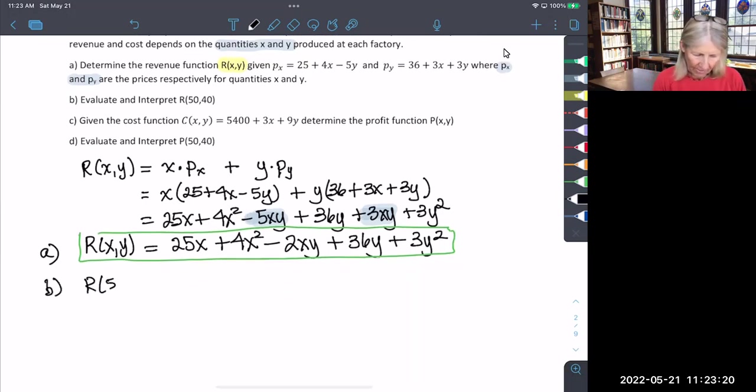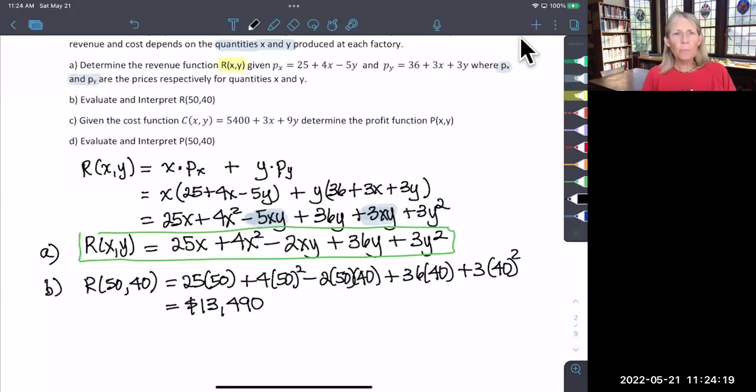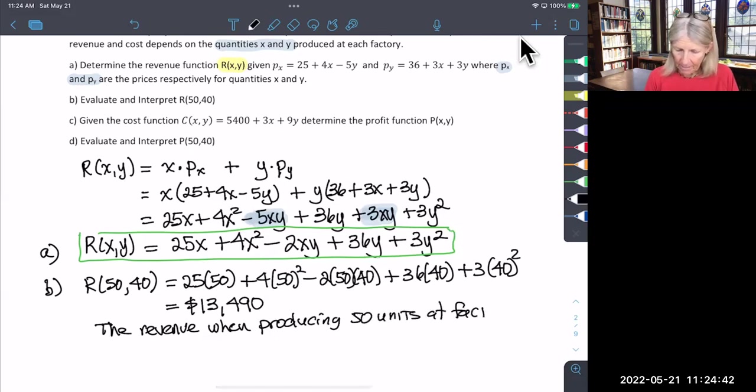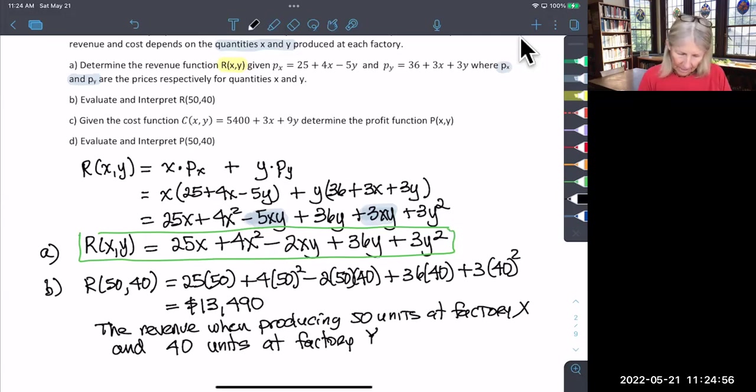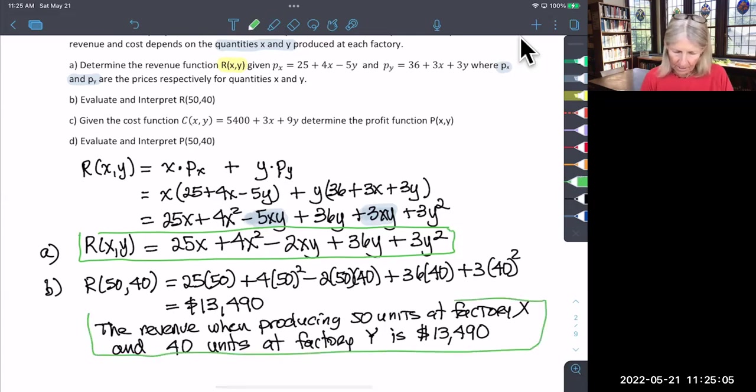We plug in 50 for X and 40 for Y. Note that the revenue function terms can be in any order. Plugging in 50 and 40 gives a dollar amount of $13,490. This represents the revenue when producing 50 units at factory X and 40 units at factory Y, which equals $13,490.